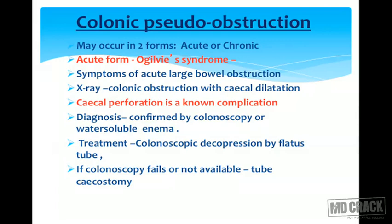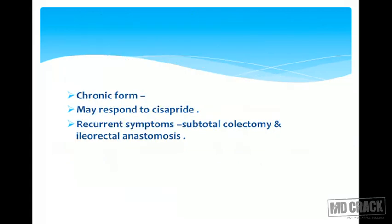Diagnosis is confirmed by colonoscopy or water-soluble enema. Treatment is colonoscopic decompression or by flatus tube. If colonoscopy fails or is not available, tube cecostomy is done. In chronic form, it may respond to cisapride, and if recurrent, subtotal colectomy or iliorectal anastomosis is done.